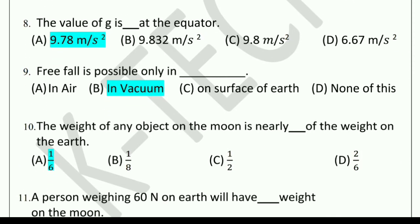Eighth question: The value of g is dash at the equator. From the options, the correct answer is 9.78 m per second square.